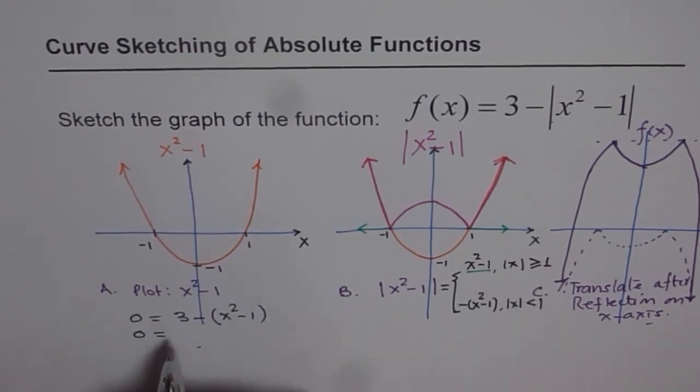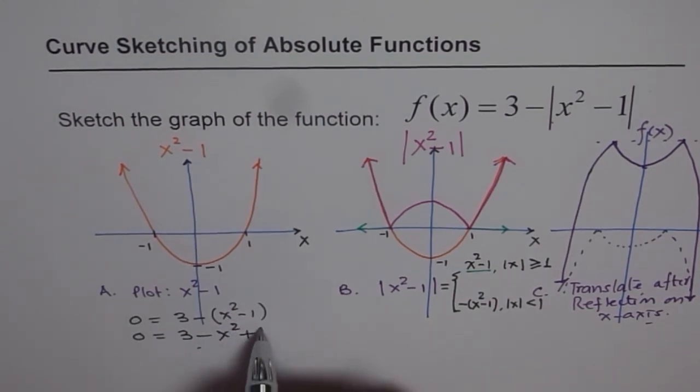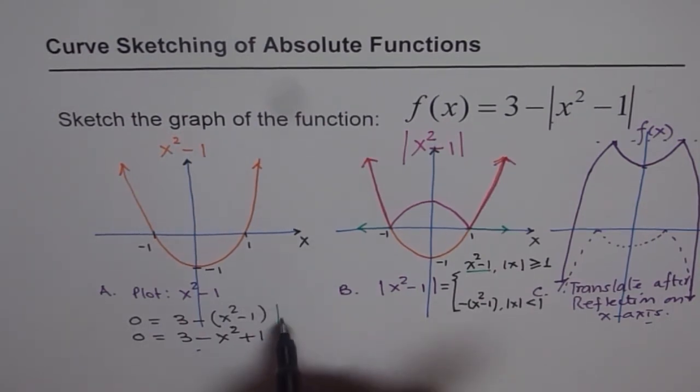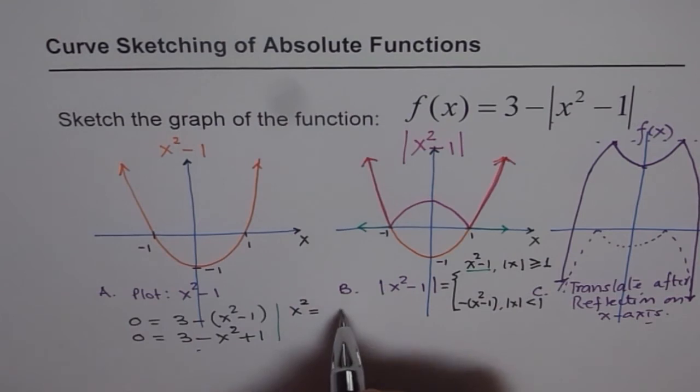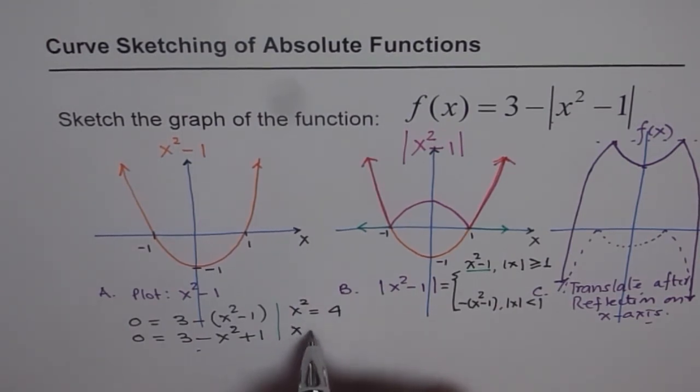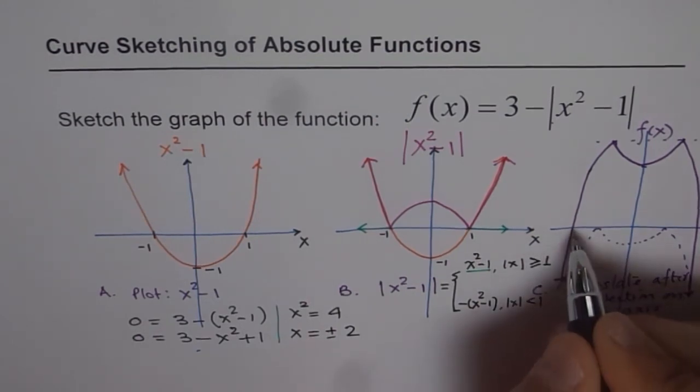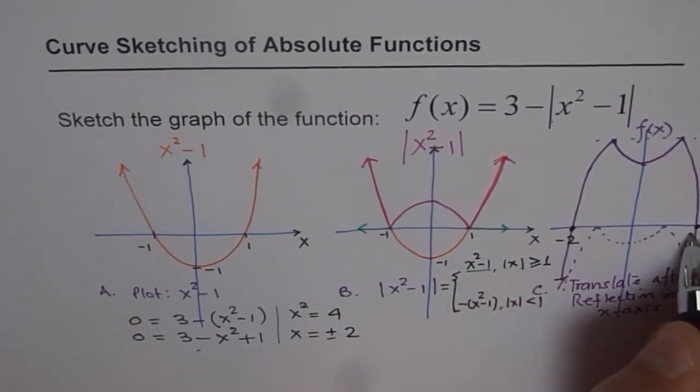You get 0 equals to 3 minus x squared, and minus and minus is plus, plus 1. So now from here, let's calculate this. So we will move it to this side and we will say x squared equals to 4 and therefore x is equals to plus and minus 2. So these points really are minus 2 and plus 2 for us.